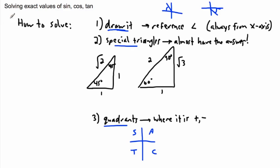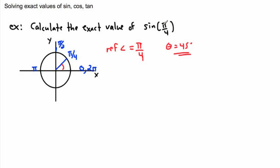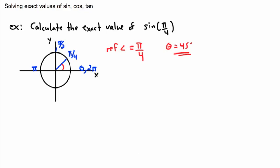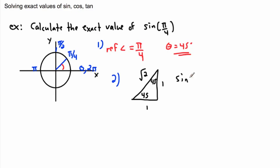Step 2: use special triangles. My reference angle is 45 degrees, so I use the 45-45-90 special triangle, which goes 1, 1, root 2. If I want sine of 45 degrees, sine is opposite over hypotenuse — that's 1 over root 2. So I almost have the answer; I just need to double-check with quadrants.